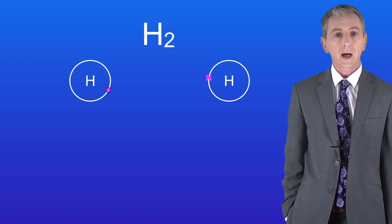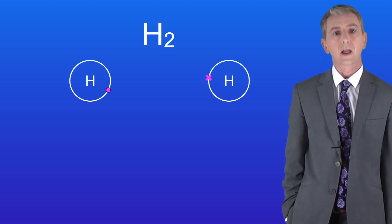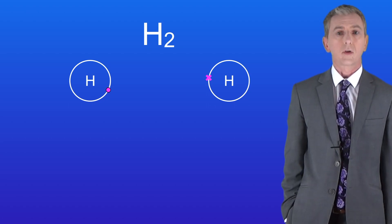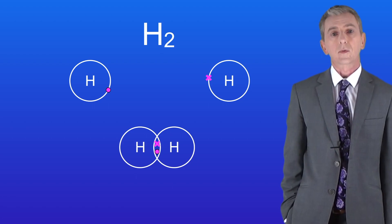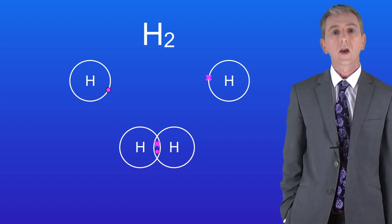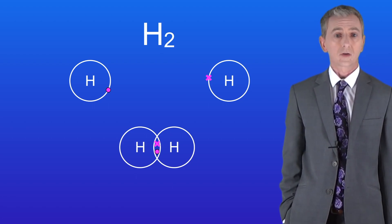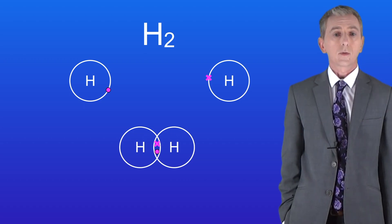So the two hydrogen atoms overlap their energy levels and they share their electrons like this. Now you can see that both hydrogen atoms have two electrons. In other words they both have a full outer energy level just like a group zero noble gas.